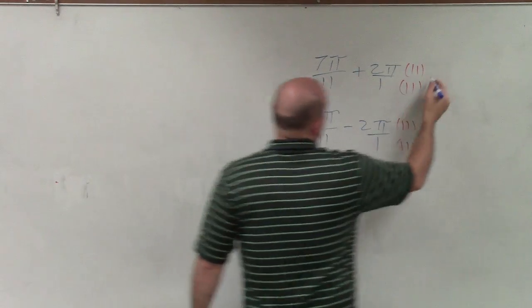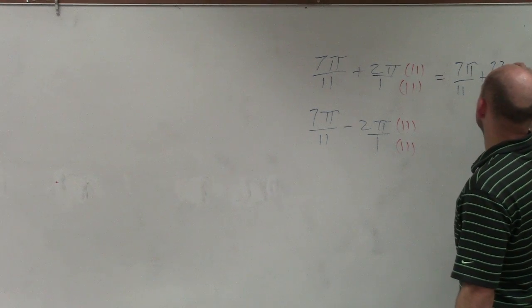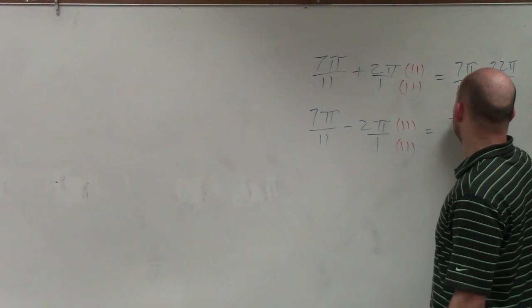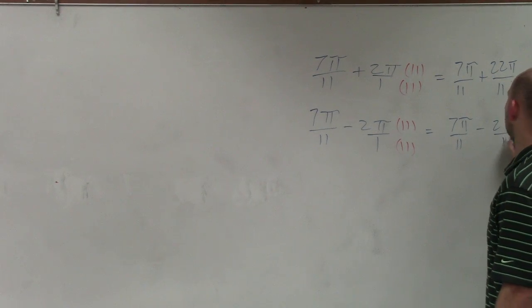Therefore, now what I have is 7 pi over 11 plus 22 pi over 11. And then over here, I have 7 pi over 11 minus 22 pi over 11.